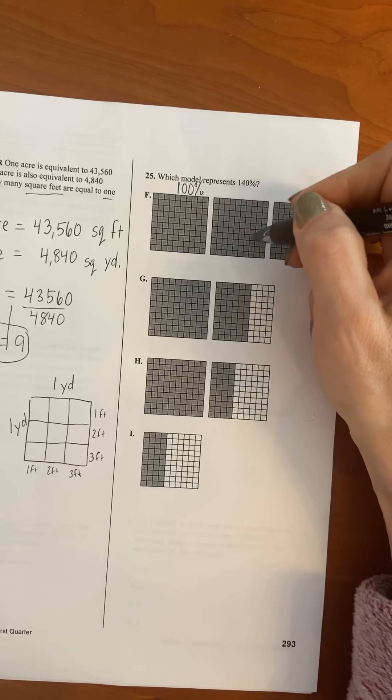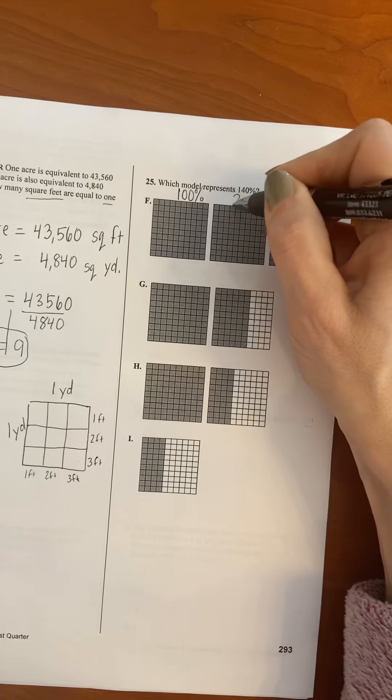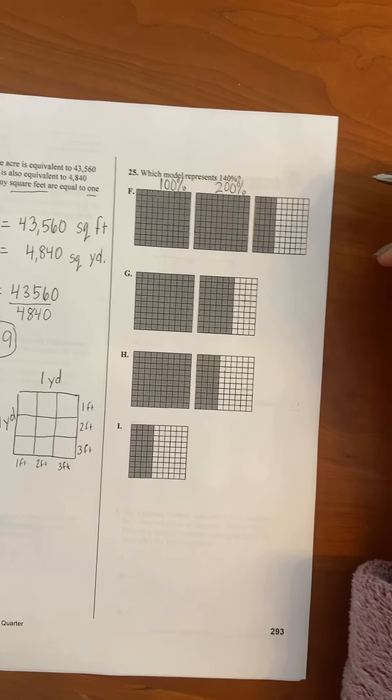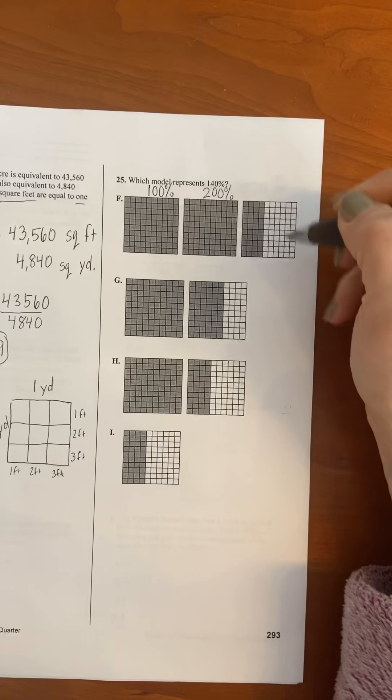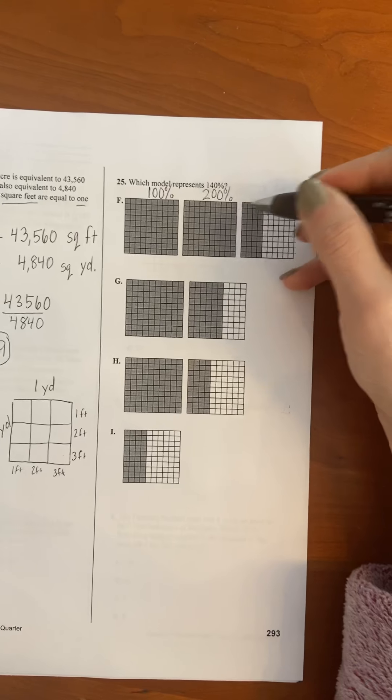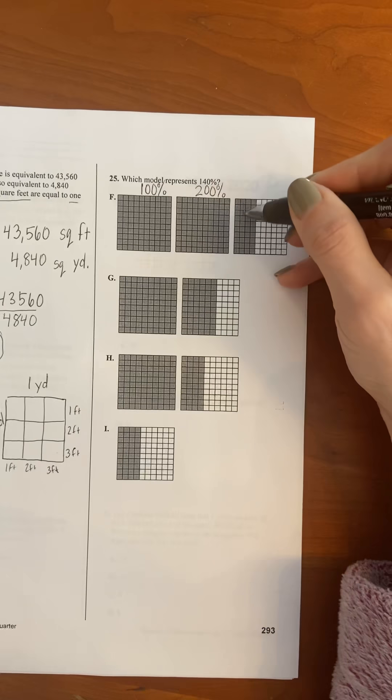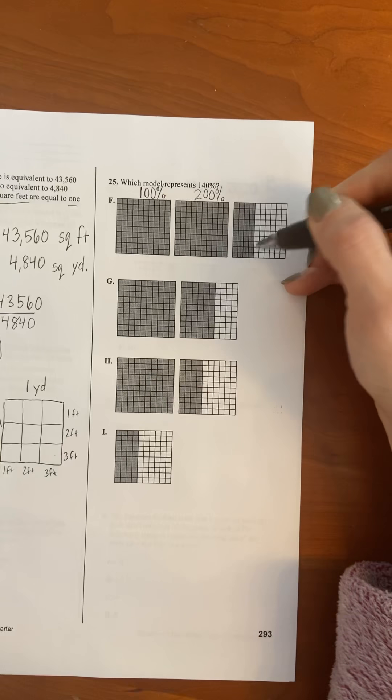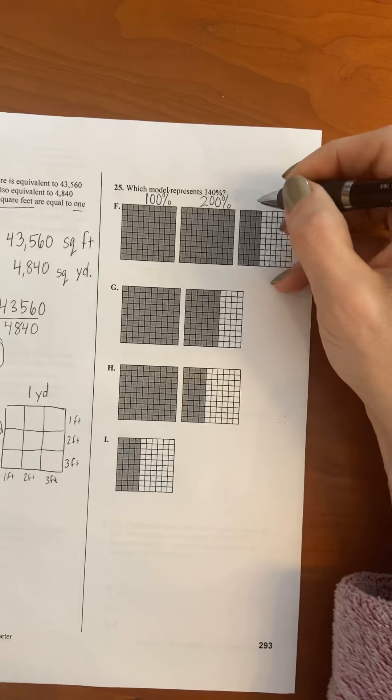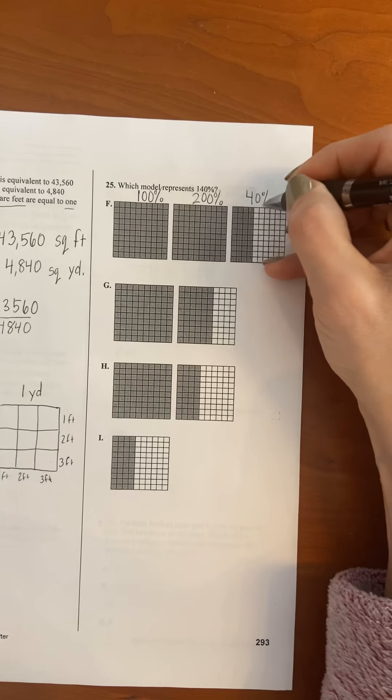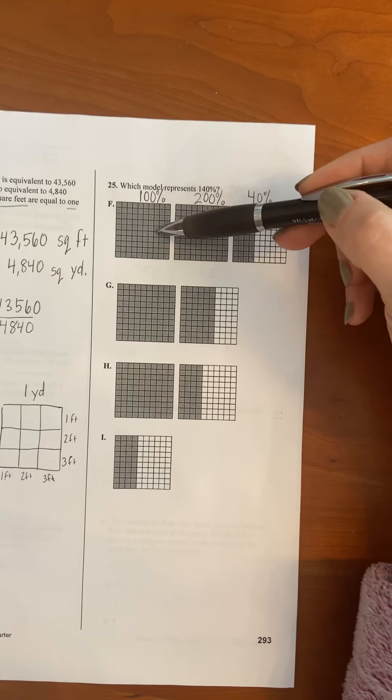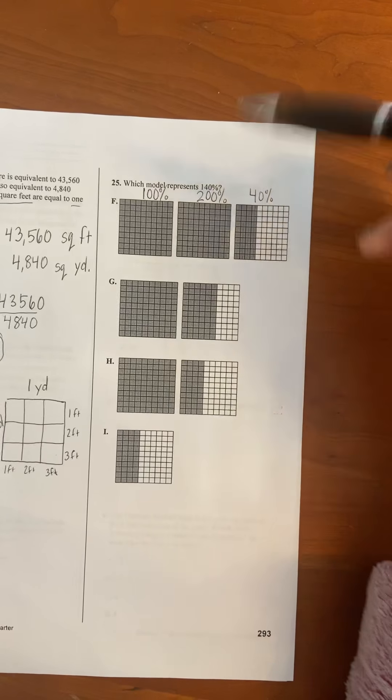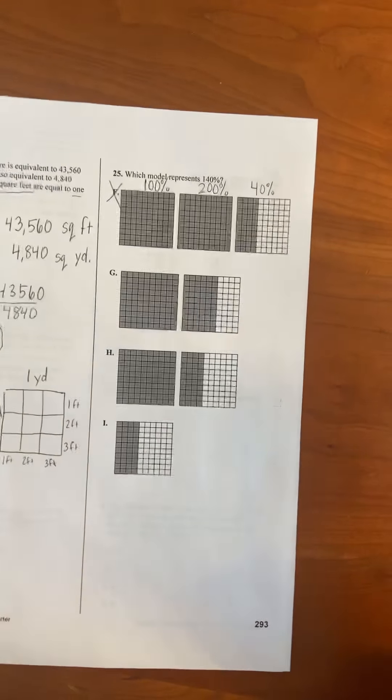There's another box just like that. That's another 100 percent. So this goes to, now we're up to 200 percent. And then on this model, these boxes are, they're 10 by 10 arrays. So 10, 20, 30, 40. So this has 40 out of 100 boxes shaded. So that's 40 percent. So this model actually represents 100, 200, 240 percent. So that is not the choice we're looking for.